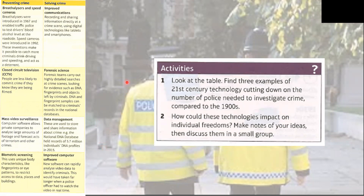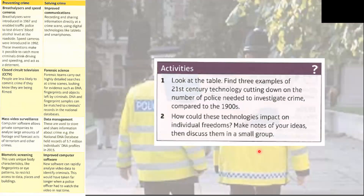Take some time to find three examples of 21st-century technology cutting down on the number of police needed compared to the 1900s, and consider how these technologies could impact on your individual freedoms. If you've got anybody at home to talk to about this, compare notes and discuss it with them — or perhaps set up a Zoom chat with one of your classmates. Pause the video here and come back once you've completed these activities.